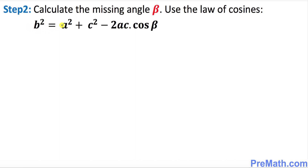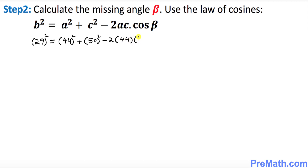In step two we are going to calculate the missing angle beta using the law of cosines. Applying the values: b squared — with b equals 29 — gives 29² = a² + c² − 2ac·cos(beta). So that becomes: 29² = 44² + 50² − 2 × 44 × 50 × cos(beta).